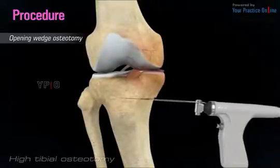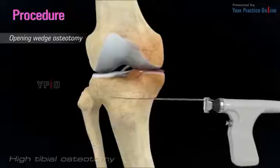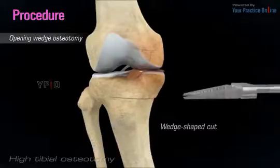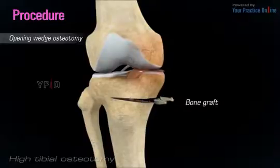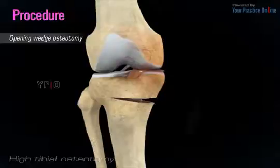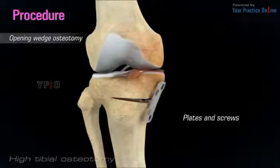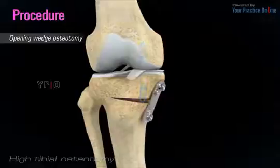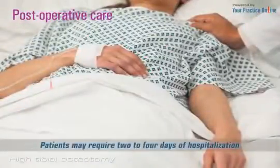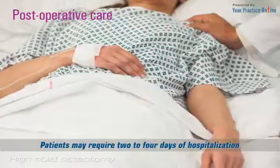In the opening wedge osteotomy procedure, the surgeon makes an incision in front of the knee just below the kneecap and makes a wedge-shaped cut in the bone. Bone graft is used to fill the space of the wedge-shaped opening, and if required, plates and screws can be attached to further support the surgical site during the healing process. This realignment increases the angle of the knee to relieve the painful symptoms.